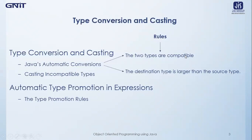When these two conditions are met, a widening conversion takes place. For example, an integer type is always large enough to hold all byte variable values, so no explicit cast is required — the byte values are automatically converted into integer values. For widening conversions, numeric types including integer and floating point types are compatible with each other. However, there are no automatic conversions from numeric types to char or boolean, and char and boolean are not compatible with each other.